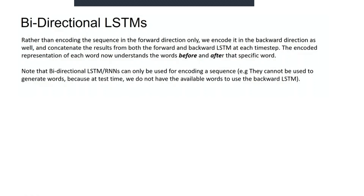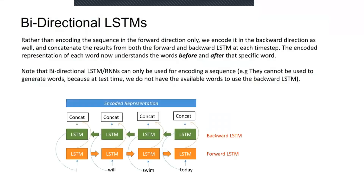In problems where all the timestamps of the input sequence are available, the bidirectional LSTM trains two instead of one LSTM on an input sequence. The bidirectional LSTM network connects two hidden layers of opposite directions to the same output. With this form of generative deep learning, the output layer can get information from past and future states simultaneously.